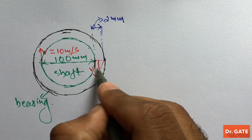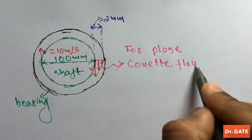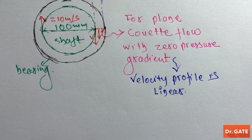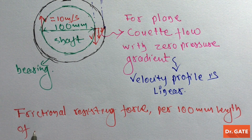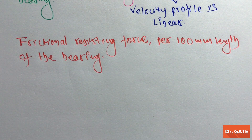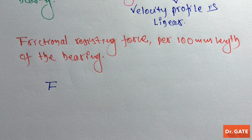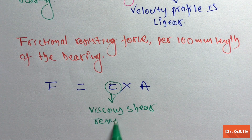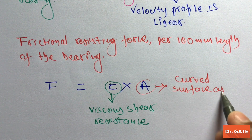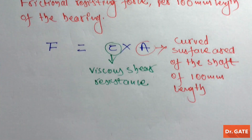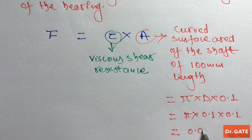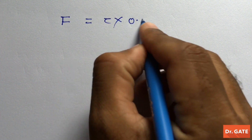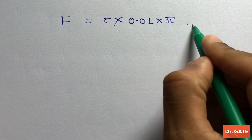We are taking a linear velocity profile because for plain Couette flow with zero pressure gradient the velocity profile is linear. We have to find the frictional resisting force per 100 mm length of the bearing. Let this frictional resisting force be F. So F = τ × A, where τ is the viscous shear resistance and A is the curved surface area of the shaft over 100 mm length. On putting the values, A = 0.01π m².